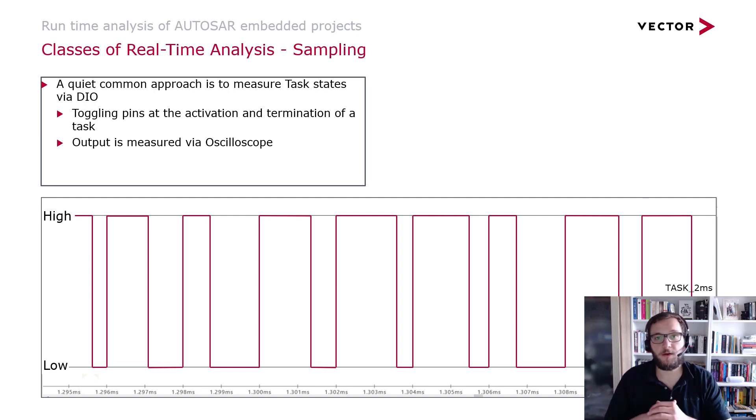Many projects use this for example with the idle task in order to find out how high the CPU load in the system is. Simply whenever the idle task is getting activated and when it's getting terminated you switch on and off one of the pins and you measure this output via the oscilloscope.